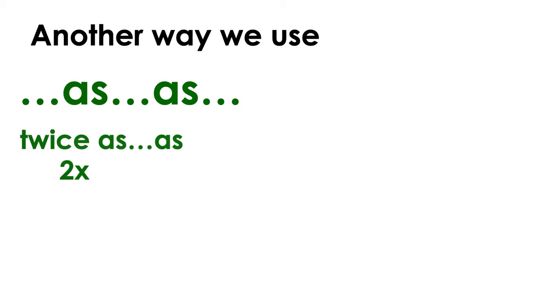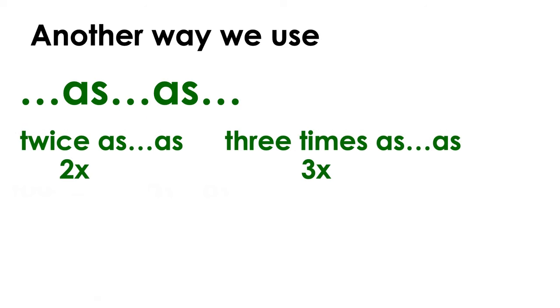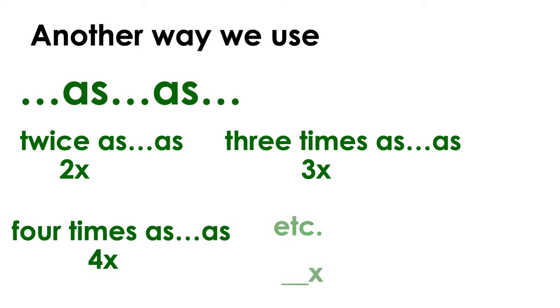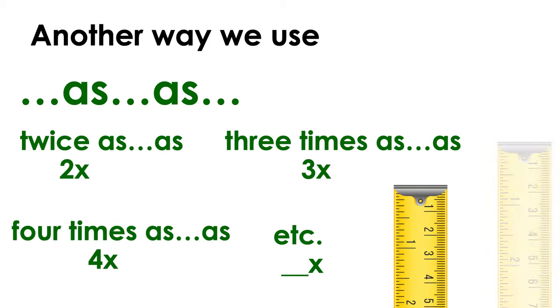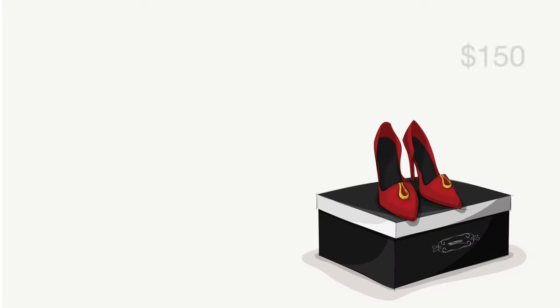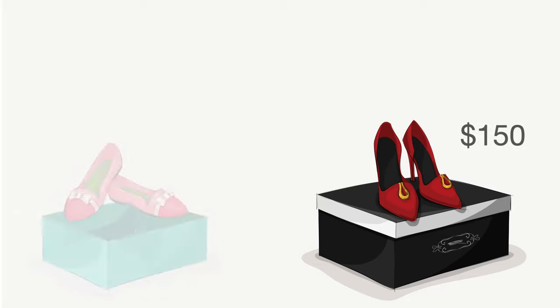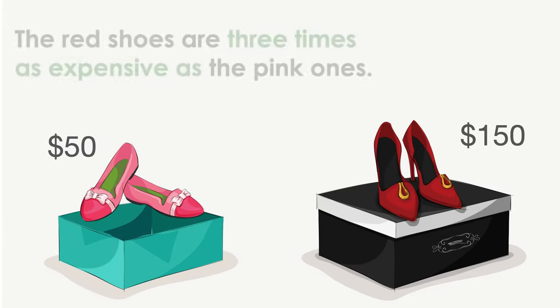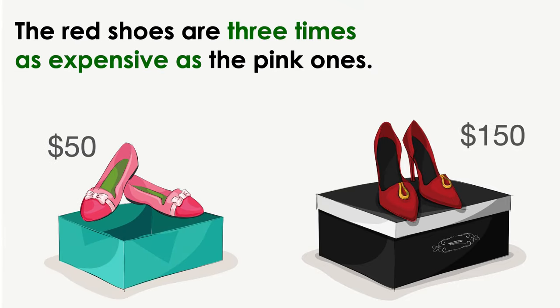Another way we use as-as is: twice as, three times as, four times as, etc. The red shoes are three times as expensive as the pink ones.